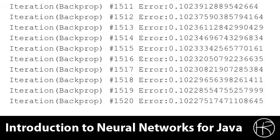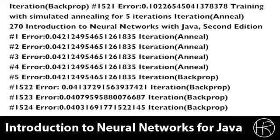Simulated annealing will be invoked because the program has detected, by iteration 1520, that the training is no longer progressing satisfactorily. At iteration 1521, it now invokes simulated annealing for five iterations. Notice the error rate before we invoke simulated annealing — it's at about 10%. After the first iteration of simulated annealing, we immediately drop to just a little above 4%. We then continue simulated annealing for five more iterations.